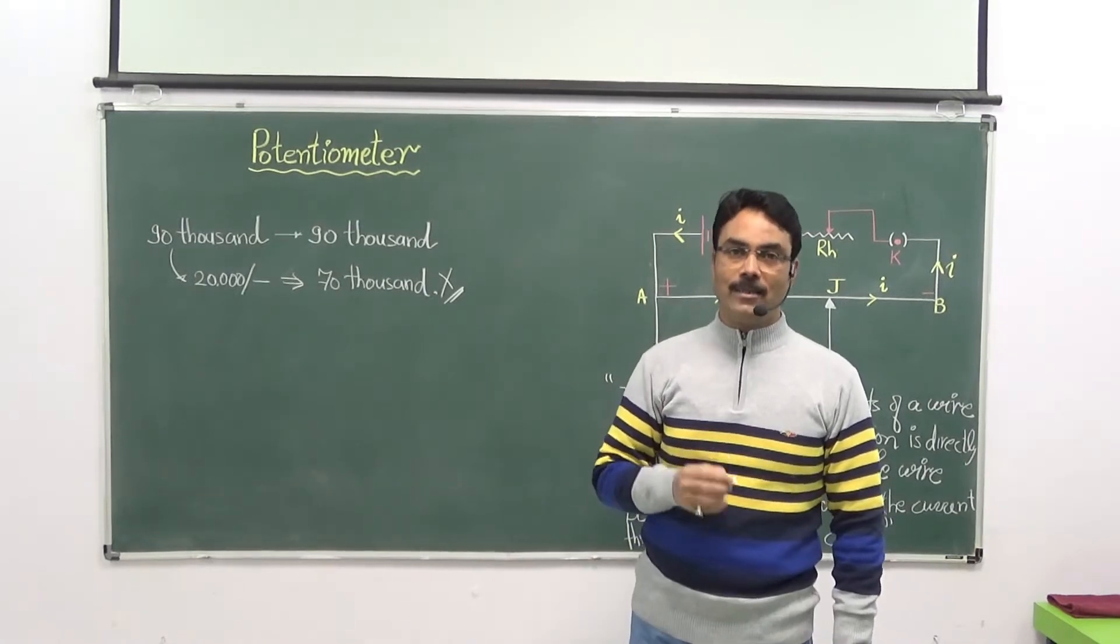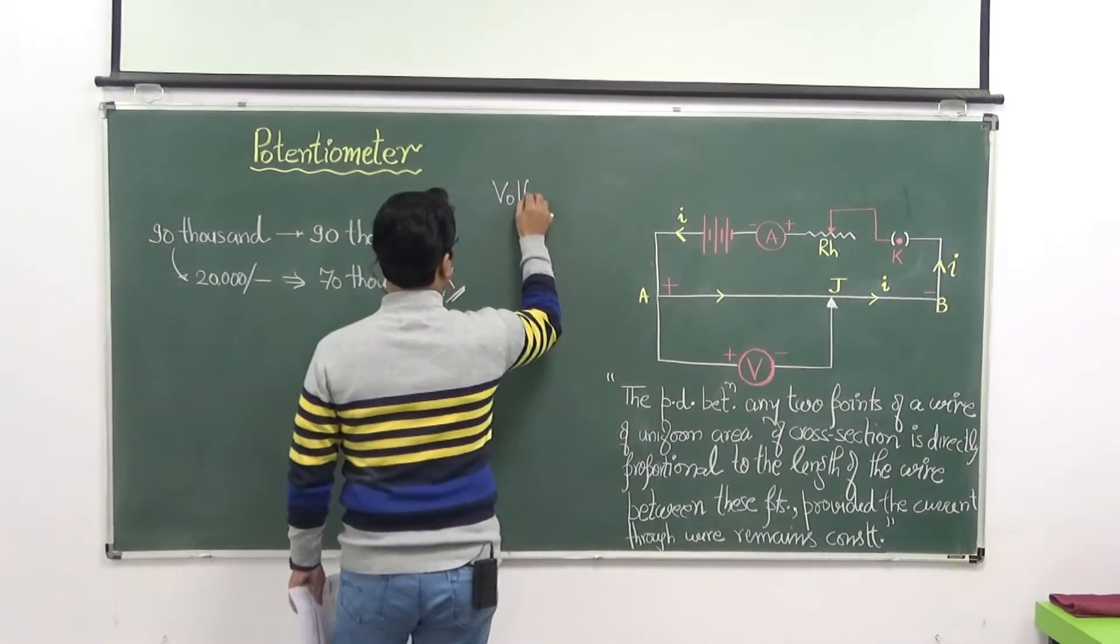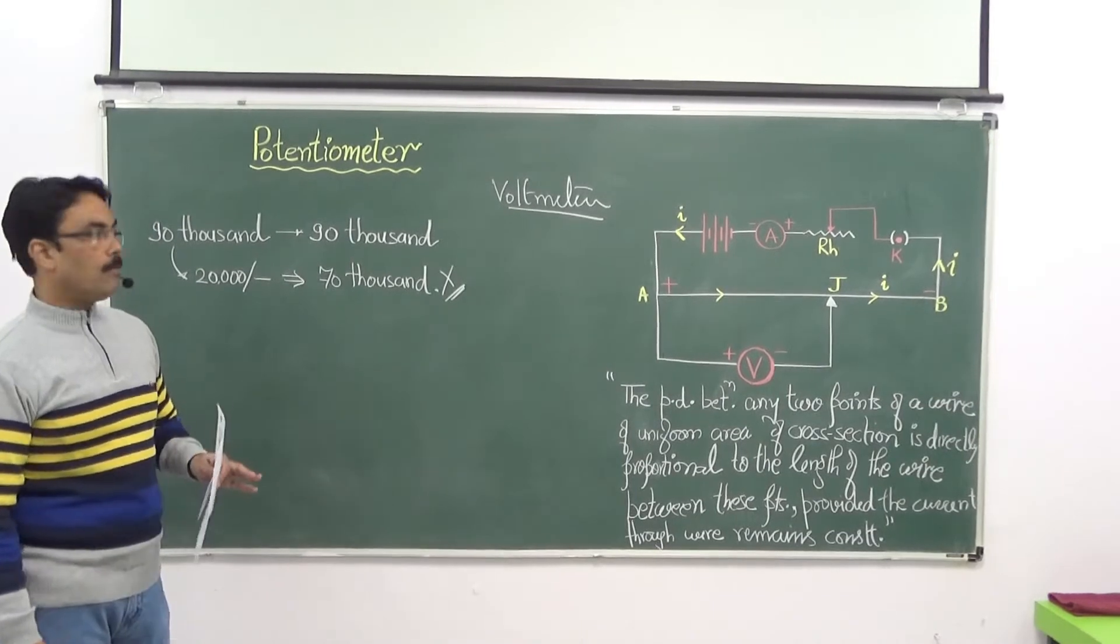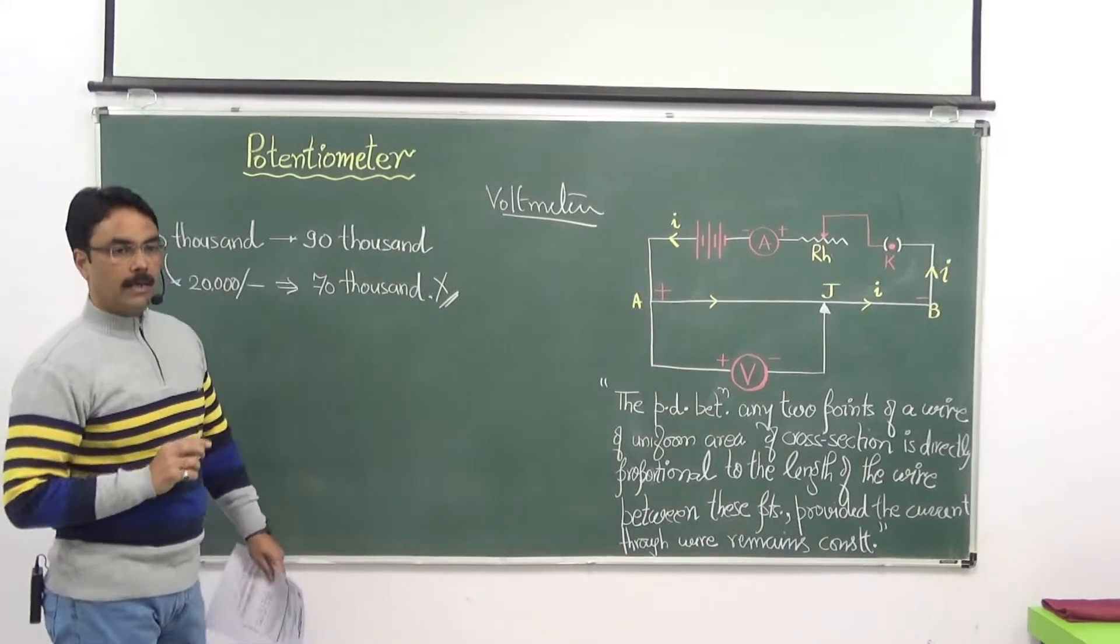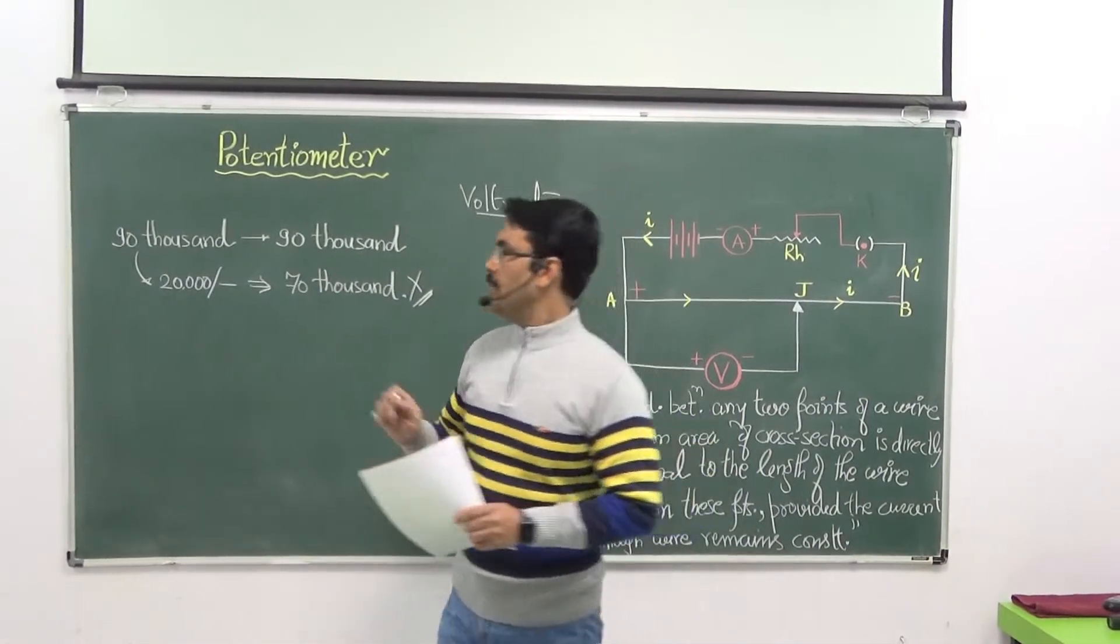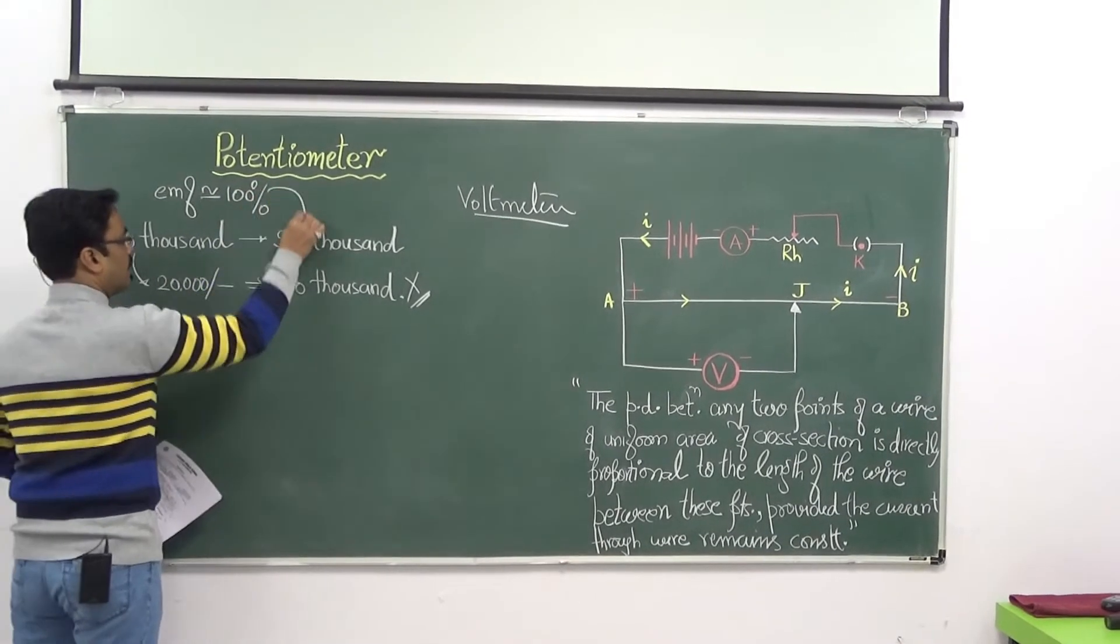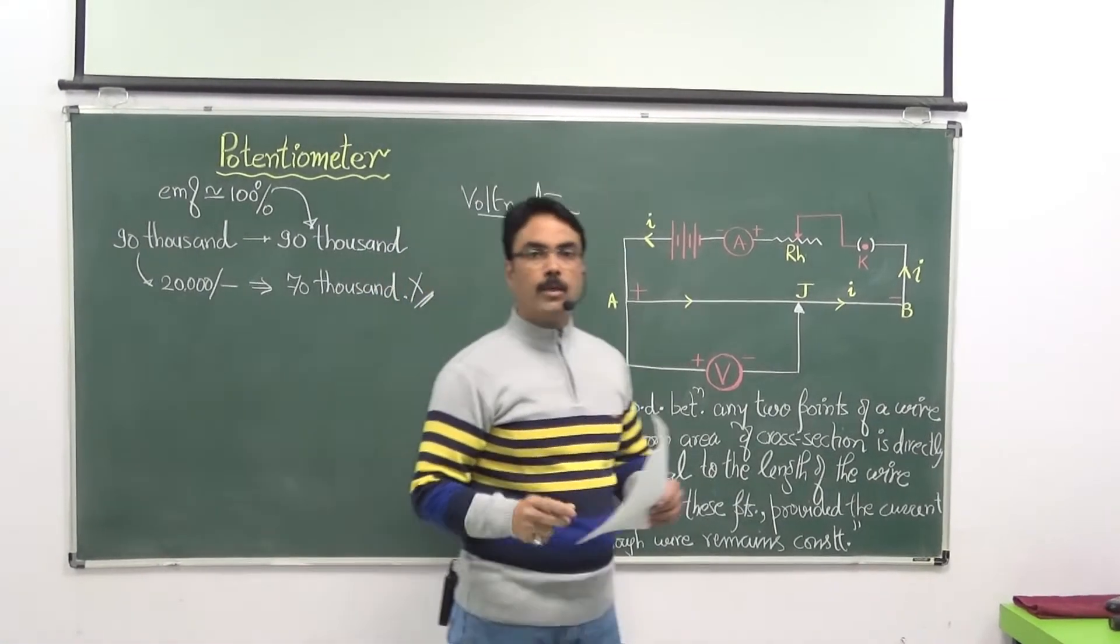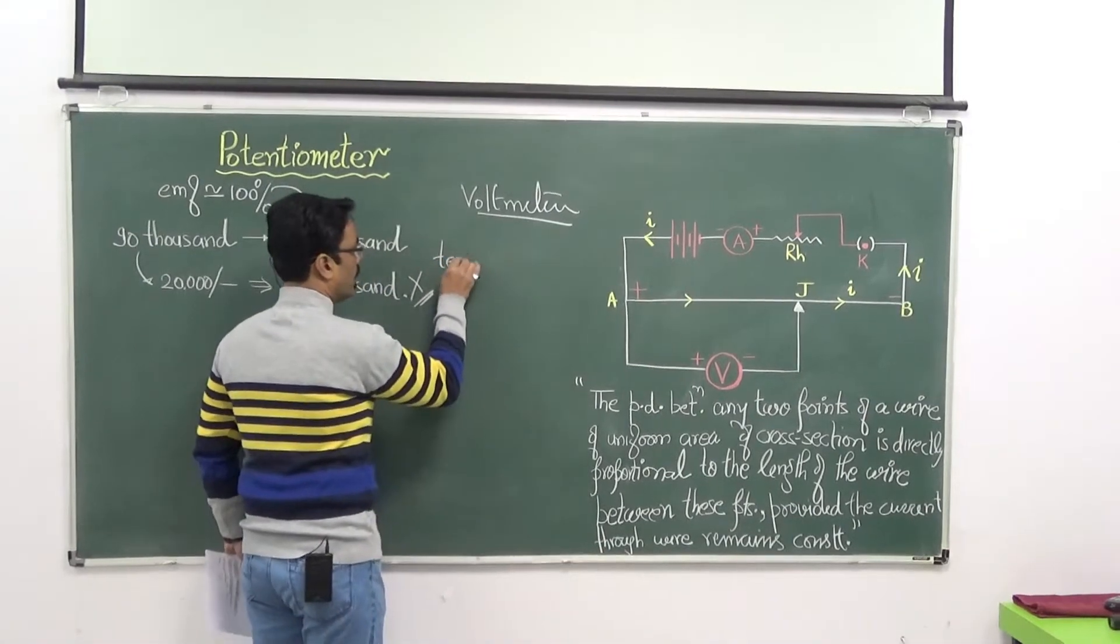So that is happening in our case now because potential difference can be measured with help of voltmeter also. With help of voltmeter we can measure the potential difference. But what is the problem? Problem is same. Ki jab hum kisi bhi circuit mein voltmeter ko lagate hain to ye circuit se kisi bhi current ke amount ko draw nahi karta hai.